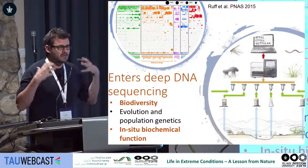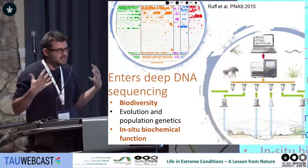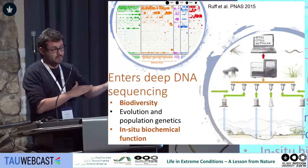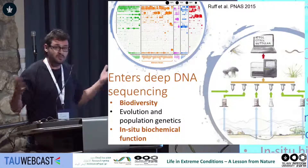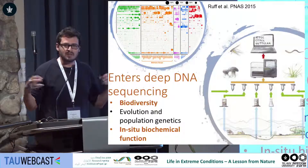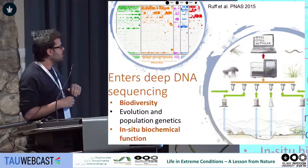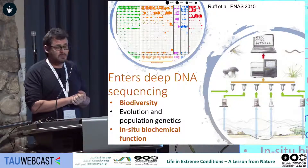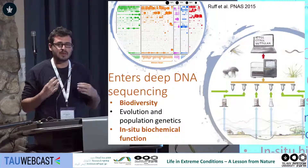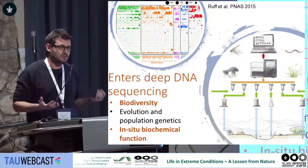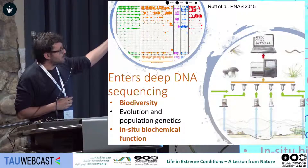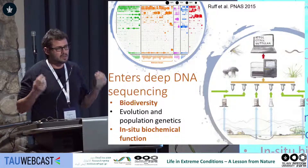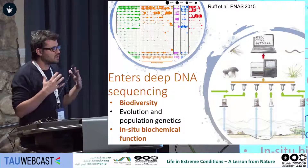Then enters deep DNA sequencing — all sorts of DNA sequencing methods that allow us to recover the depth of DNA present in environmental samples. Whether it's soil, root, human skin, or stool, we can learn about biodiversity, evolution, population genetics, and biochemical processes from this data in ways we couldn't before. What we have at the top here is from a paper that revealed the extent of unknown bacterial diversity in the ocean — it was really eye-opening.